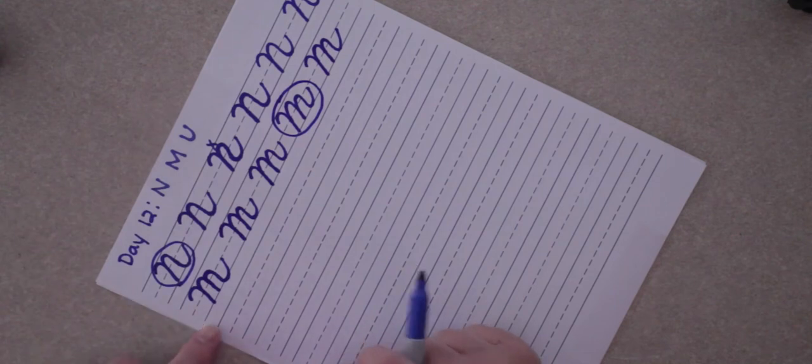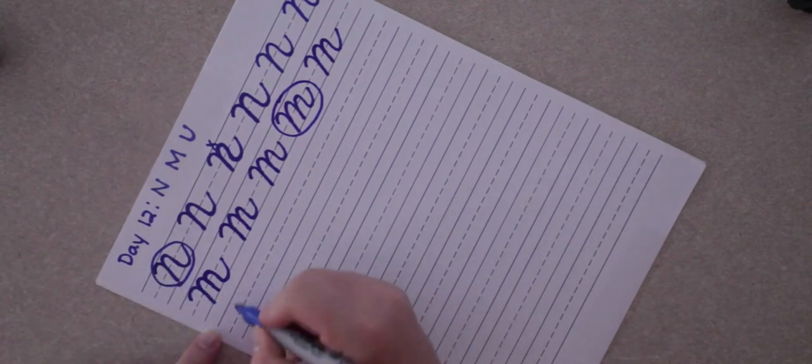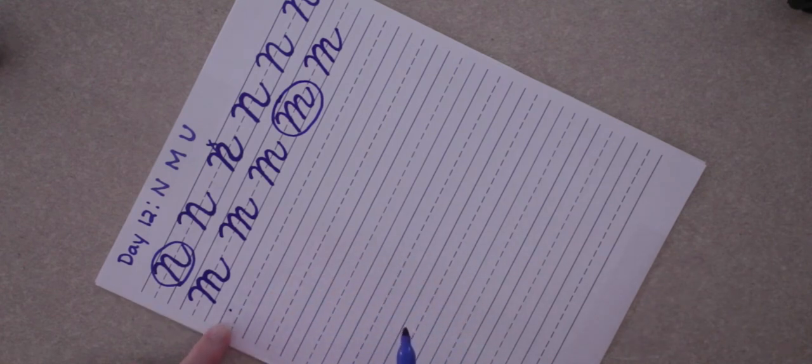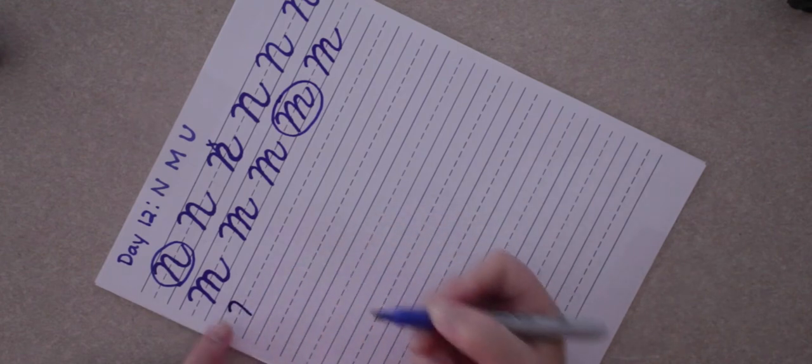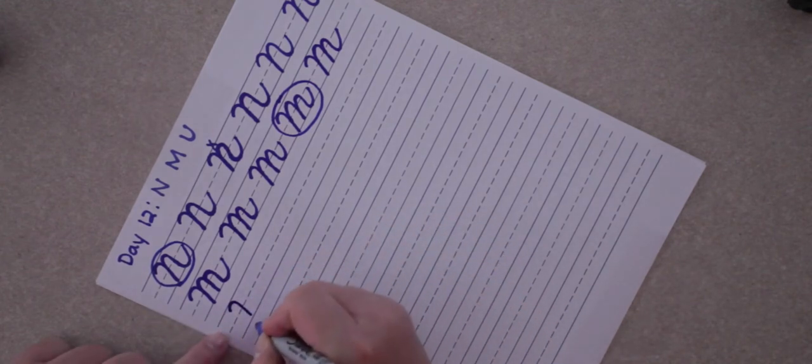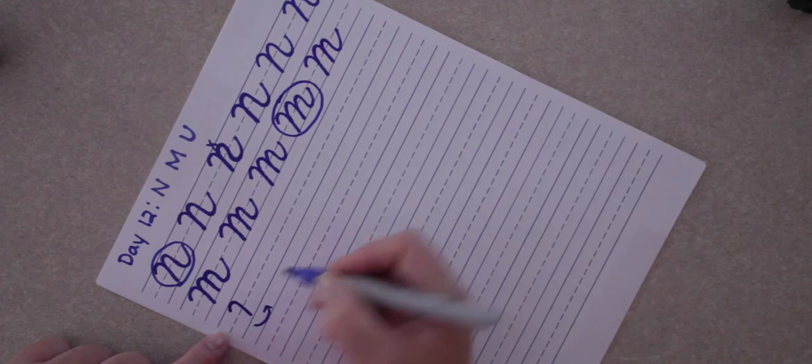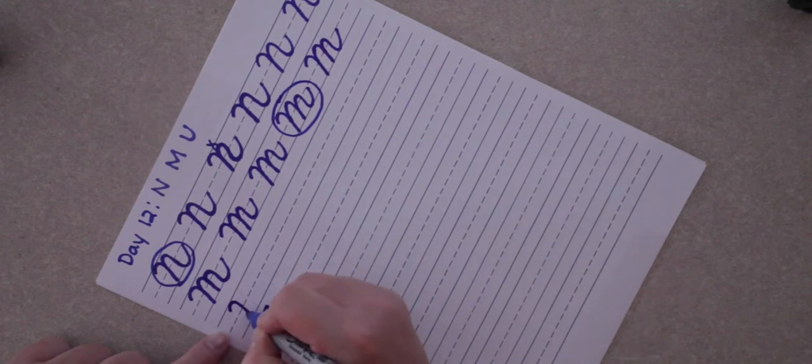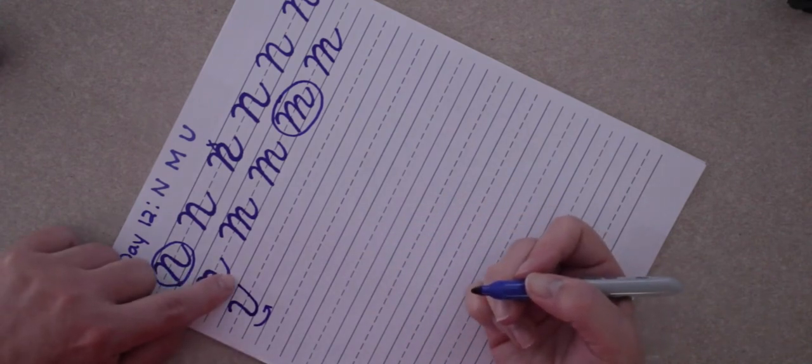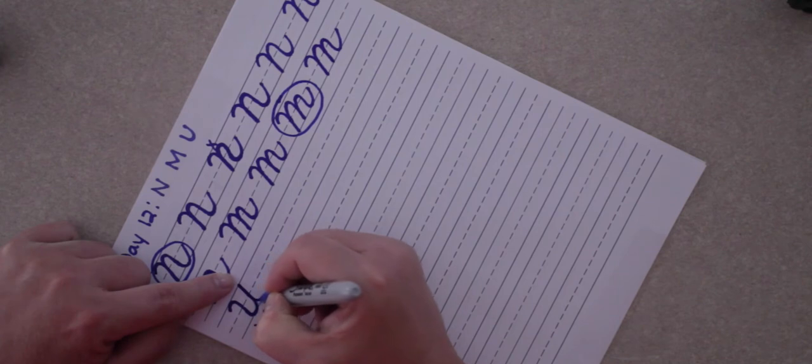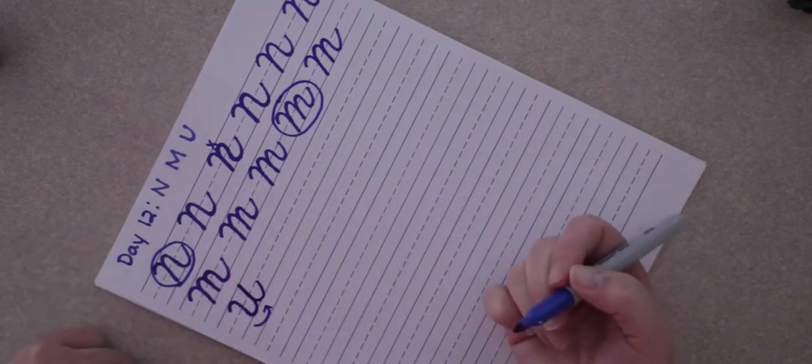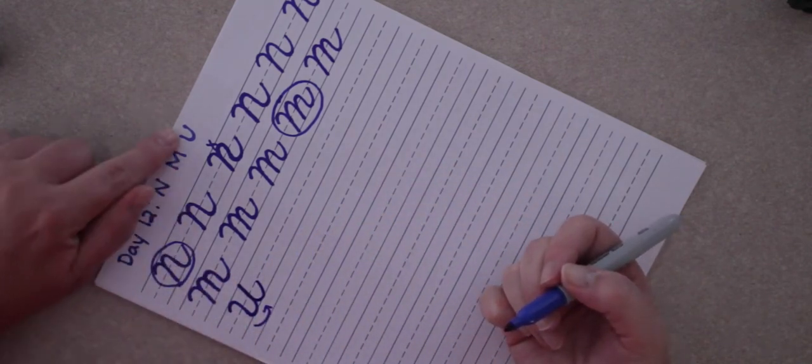Now we're ready for capital U. Capital U starts out the same way as our M and our N. Just a tiny bit below that top line. You start out with that same motion, but when you start to come down, you're going to have to curve around this way because you're going to make the bottom of that U right there. So you're going to go all the way up, touch the top, but then you've got to trace that side back down and put on the tail. So it looks very similar to a print U.